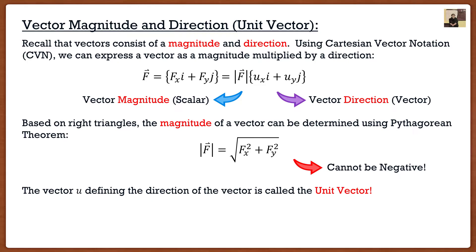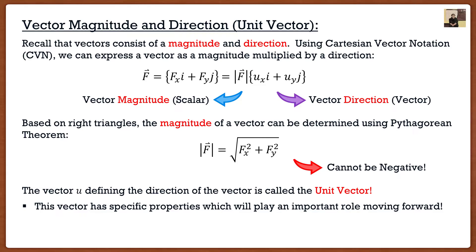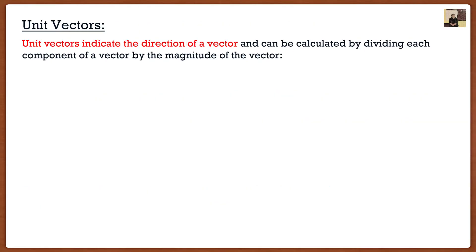But what about the unit vector — that other piece? Again, the vector we multiply the magnitude into defines the direction and is called the unit vector. This unit vector has very specific properties important moving forward. How do we get this unit vector? It's actually very simple: unit vectors are obtained by dividing each component of a vector by the magnitude of the vector.